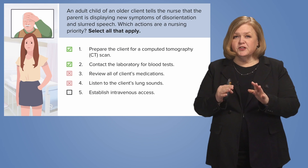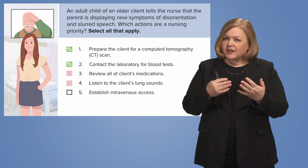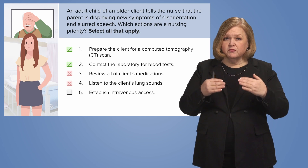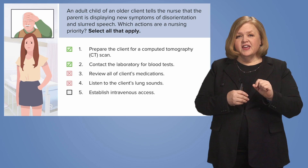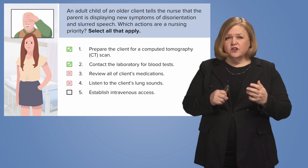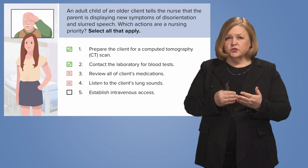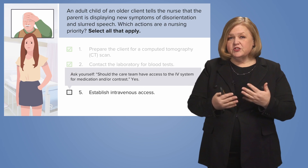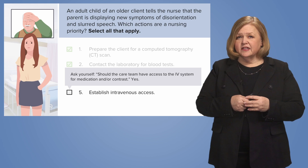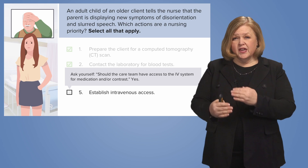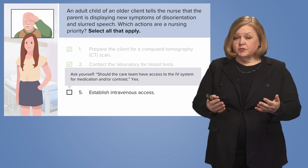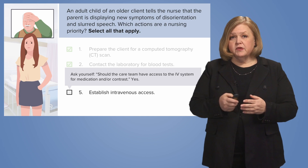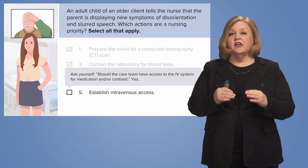Now we're up to number five. But before we do — remember, whether you got it right or wrong does not matter; it's what you're learning through the process that's most important. Number five: establish intravenous access. Is that a priority for an older client with new onset symptoms where I'm suspecting a stroke? It is. This patient is likely going to need a higher level of care — they're going to CAT scan, and we want to make sure we have good IV access. If this is the type of stroke where we can give thrombolytic therapy, we're going to need to give it IV. So absolutely, you want a good and patent IV established.